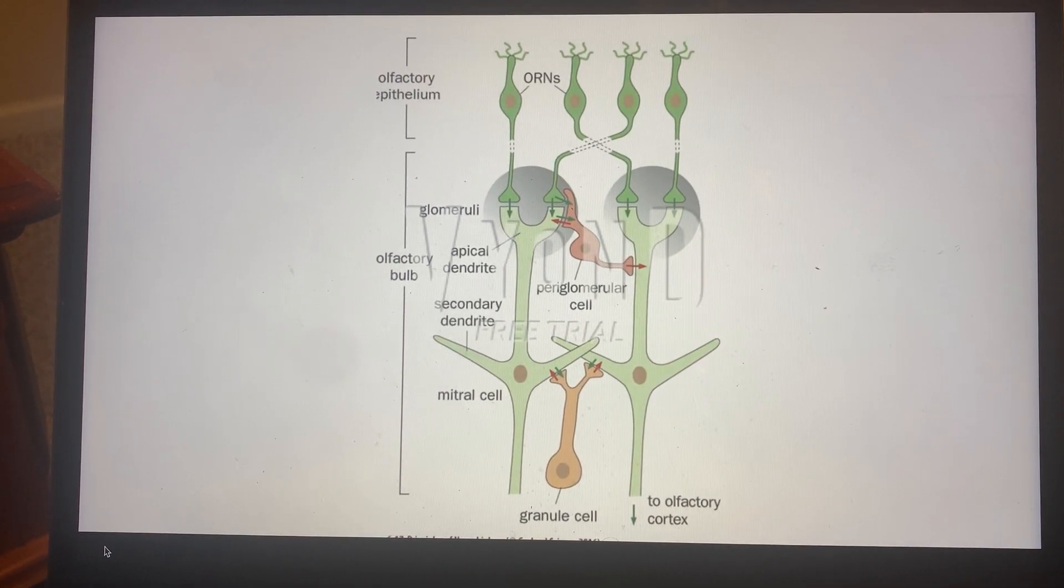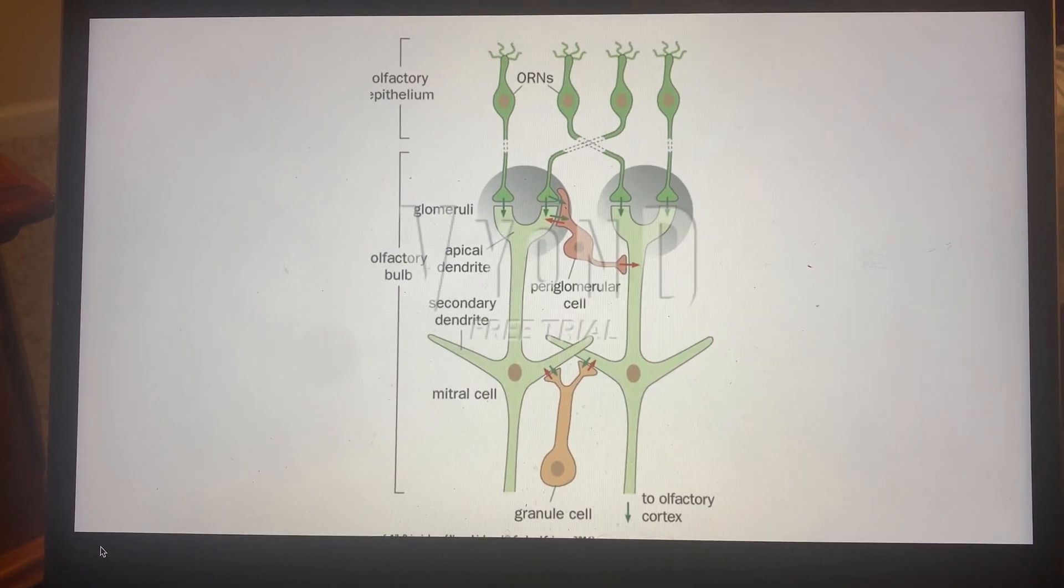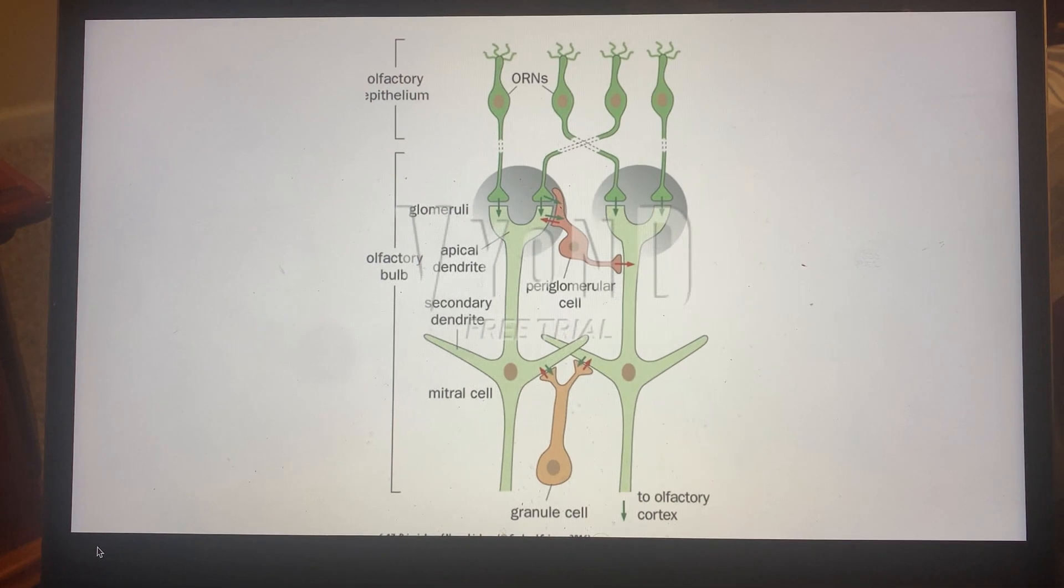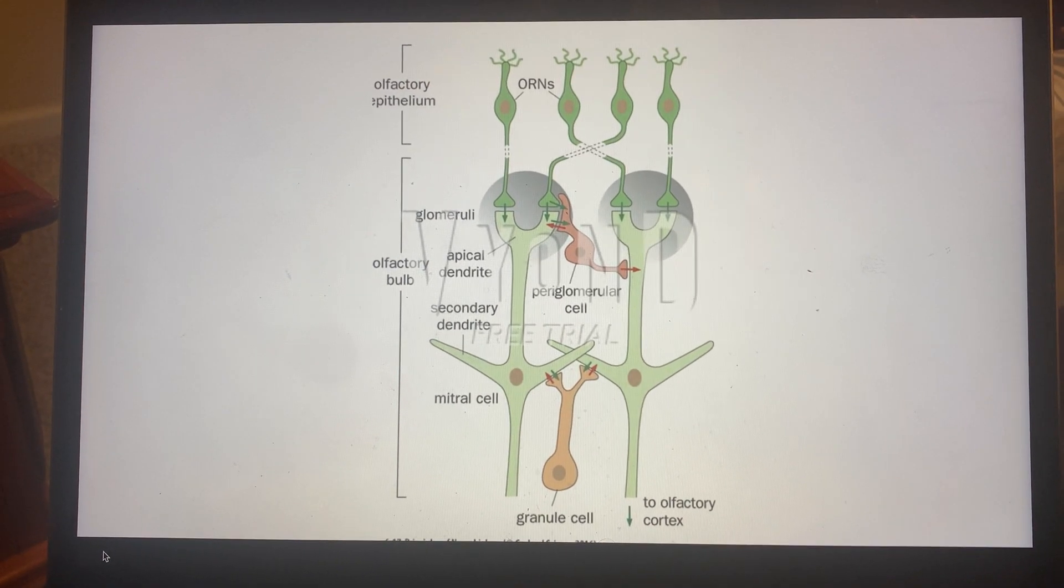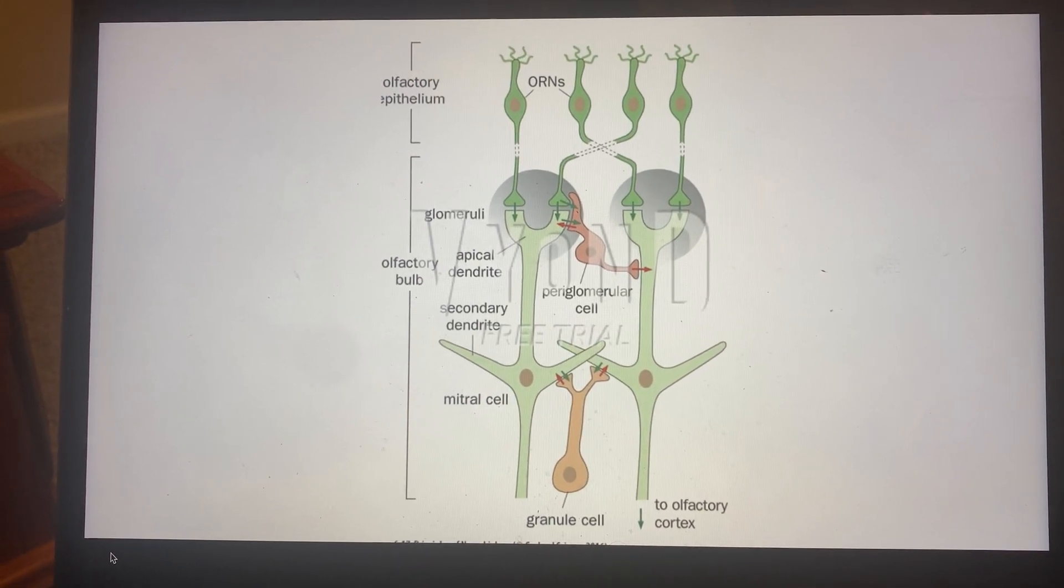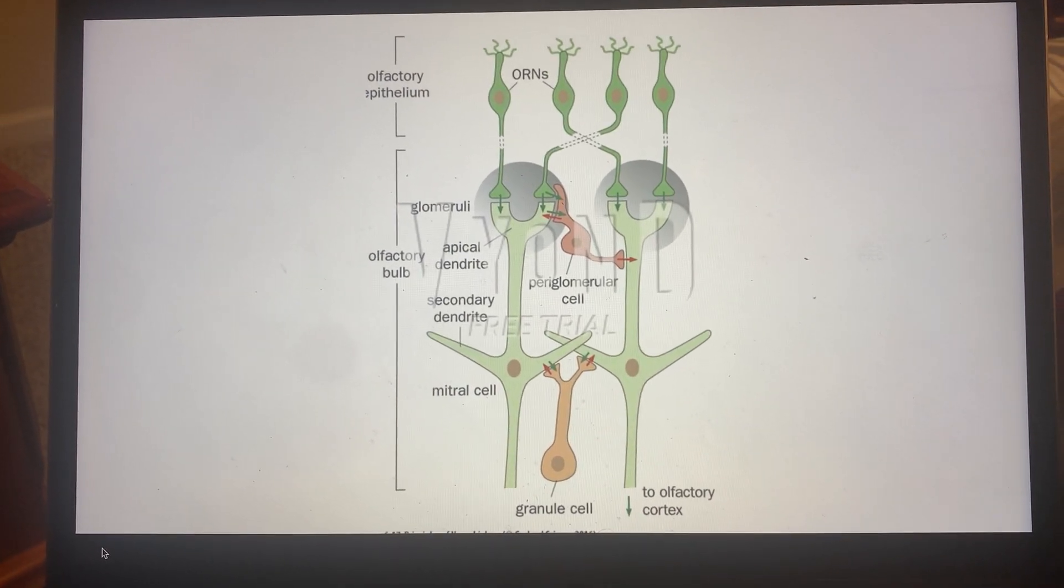In low concentrations, these p-cells will be less activated, and less activation will allow for more activation of these mitral cells.